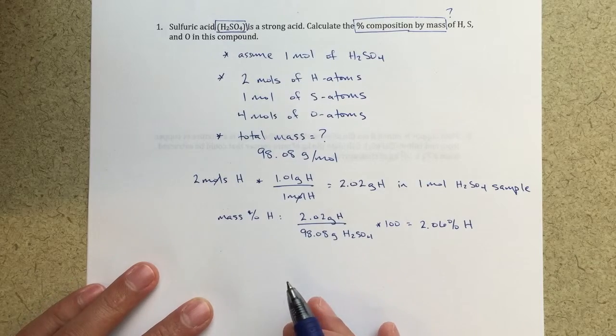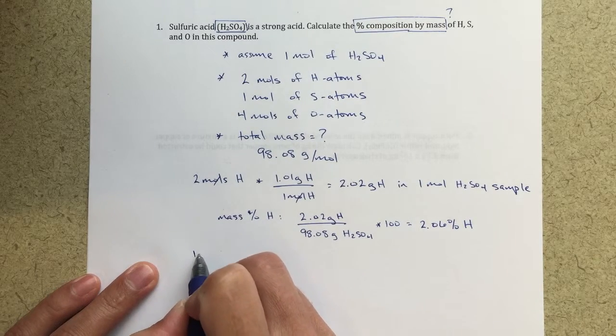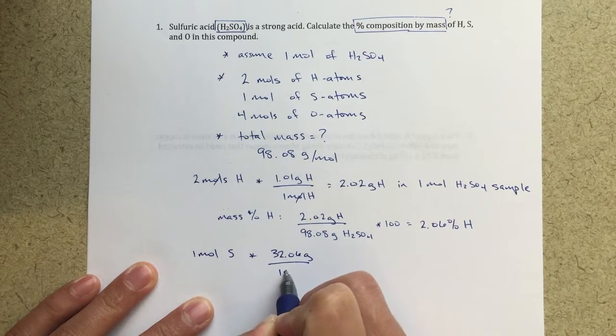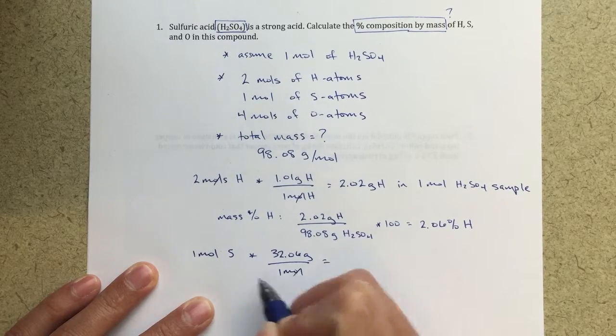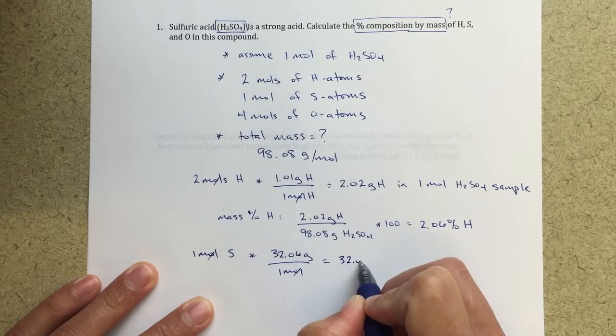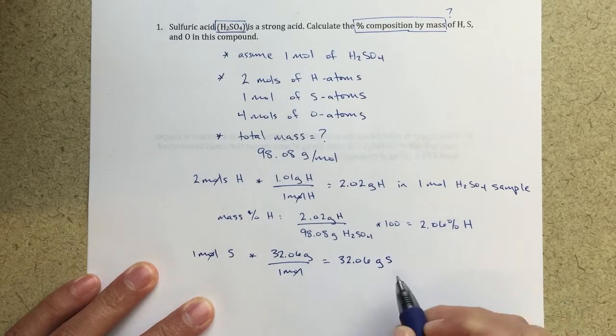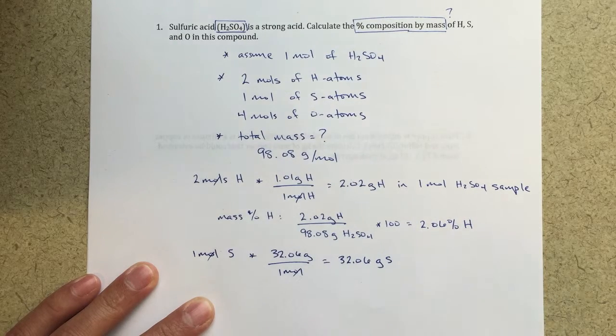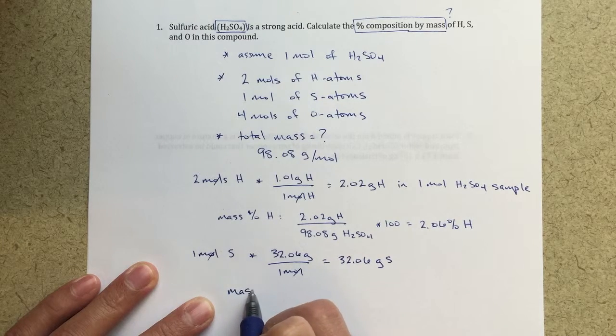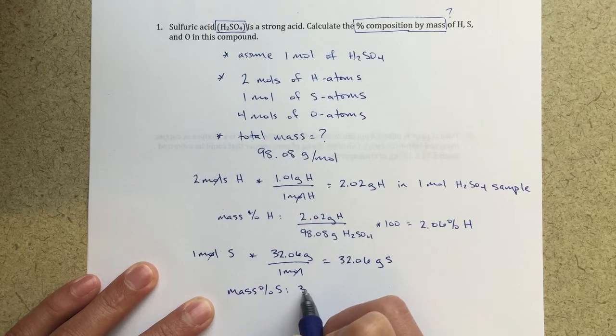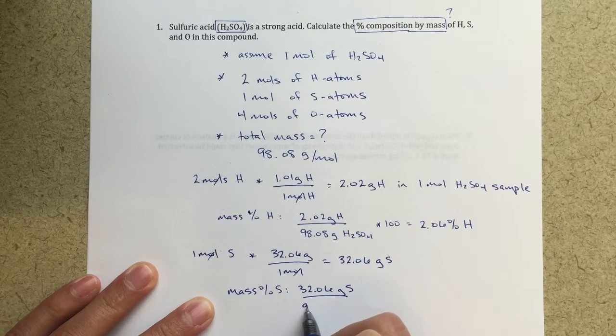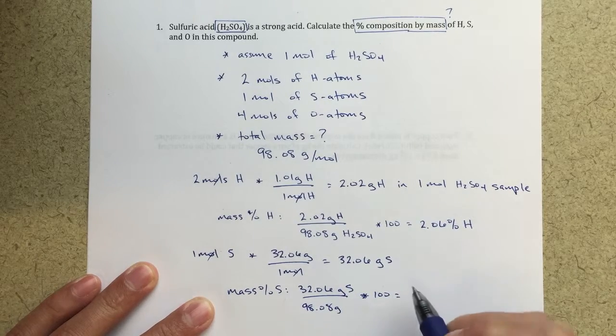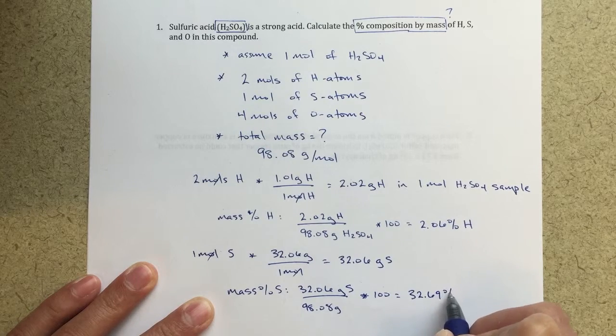I can do the same process for all of the other components, basically. So for sulfur, I'm going to have one mole sulfur times 32.06 grams over one mole. That's a pretty easy calculation for us to do. My moles will cancel. I'll get 32.06 grams of sulfur. I can take that 32.06 and divide that by 98.08. So again, this is the amount of sulfur in my sample. So for the mass percent sulfur, I'm going to take 32.06 grams sulfur, divided by the total again, 98.08 grams, multiply that by 100, and that's going to give me a value of 32.69% sulfur.